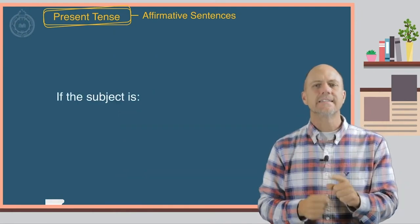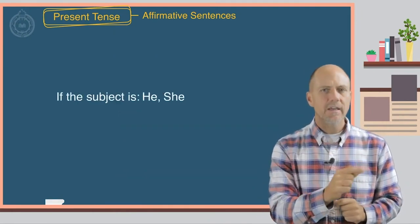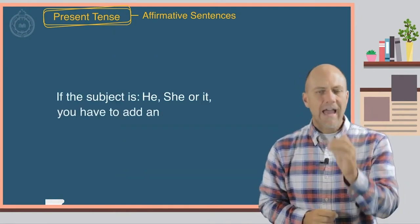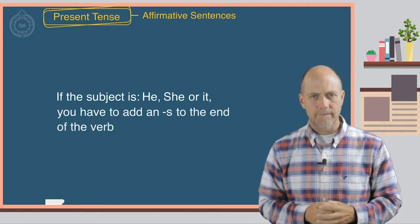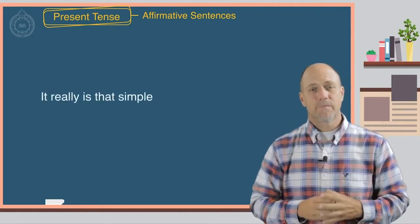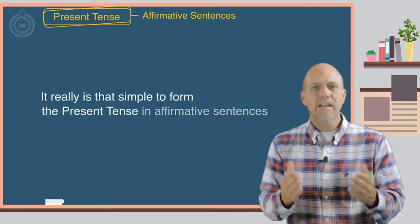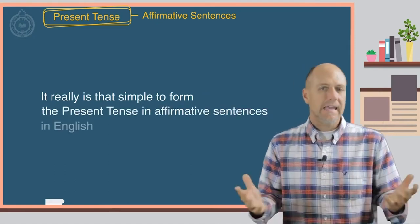If the subject is he, she, or it, you have to add an S to the end of the verb. It really is that simple to form the present tense in affirmative sentences in English.